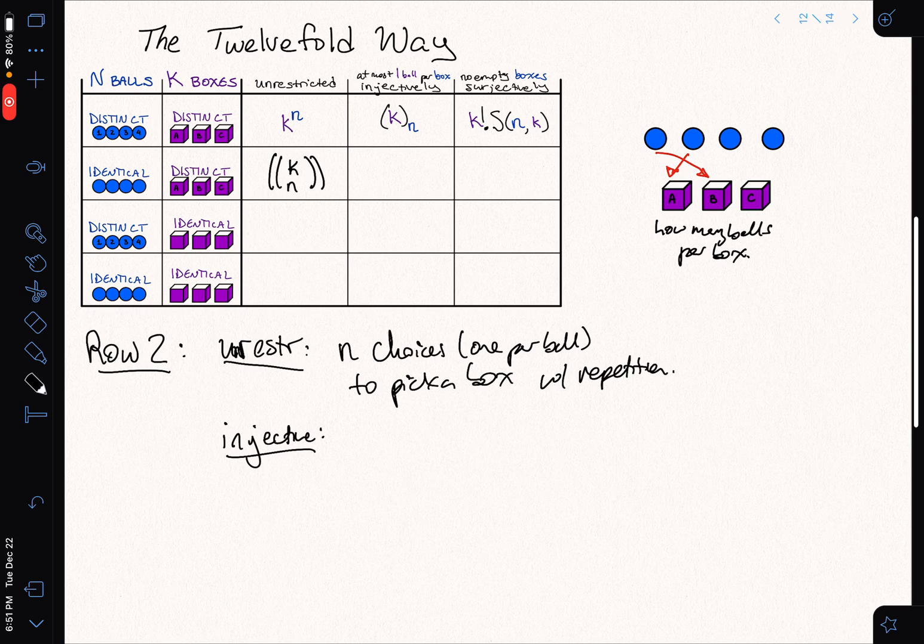So for that, I just know that n of the boxes, so some boxes have one ball and the rest are empty. So what does that mean? That means I just need to choose which boxes get a ball. How many get a ball? Well, there are n in total. So there are K boxes. I choose n of them that will each get one ball.